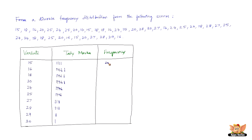So the frequencies are: 15 has 4; 16 has 6; 18 has 6; 20 has 6; 24 has 5; 25 has 5; 27 has 3; 28 has 3; 29 has 1; and 30 has 1. Adding them up: 4+6=10, +6=16, +6=22, +5=27, +5=32, +3=35, +3=38, +1=39, +1=40. The total is 40, and the total number of scores in the question is also 40, confirming our answer. This is the way we construct a discrete frequency distribution.